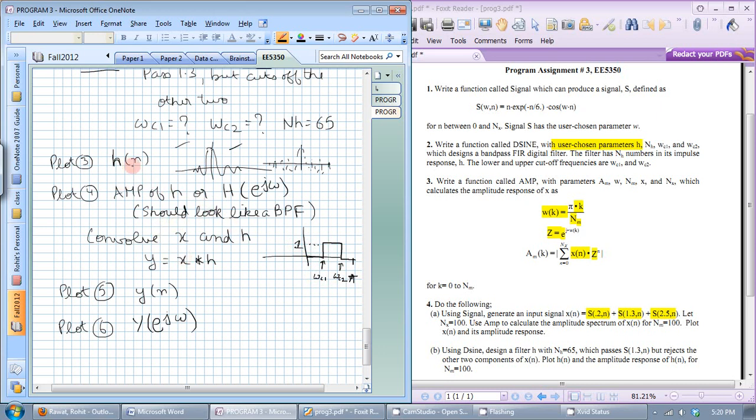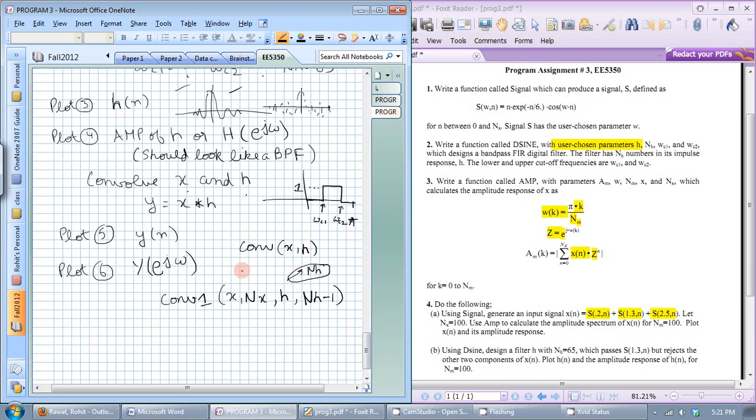So once you have plotted h and plotted the amplitude response and verified it looks ok you can convolve x and h. For convolution you can use any function you can even use the built-in MATLAB convolution function that's ok. If you are using the convolution function you wrote in programs 1, 2, or 3 you would need to pass x, nx, h, and one strange thing here is that you would need to pass nh-1 because if you remember h has nh elements it doesn't have nh plus 1 elements so this is a slight discrepancy in the problem.